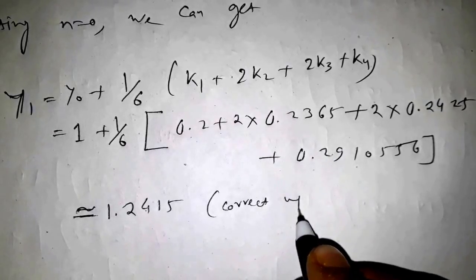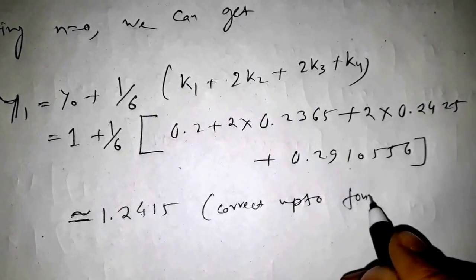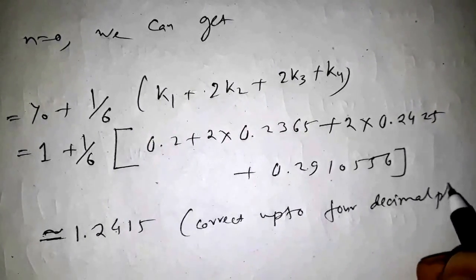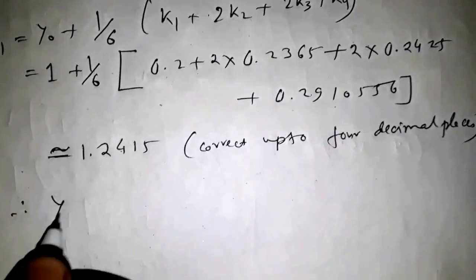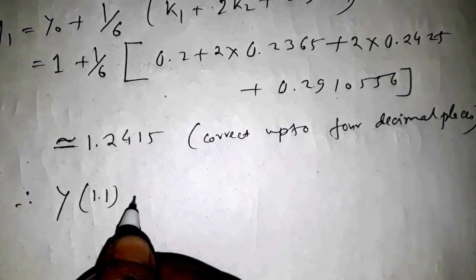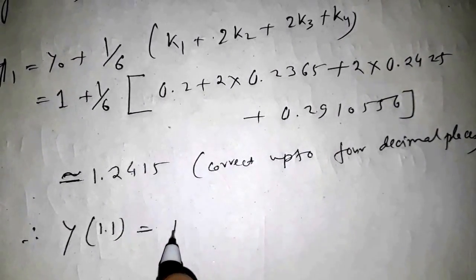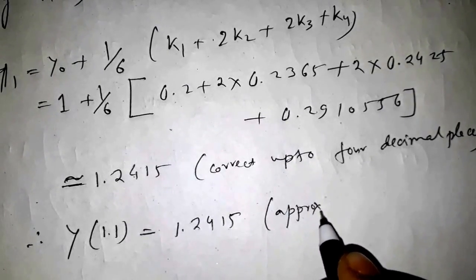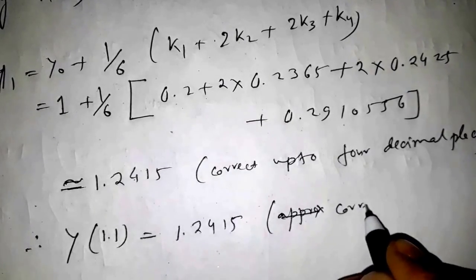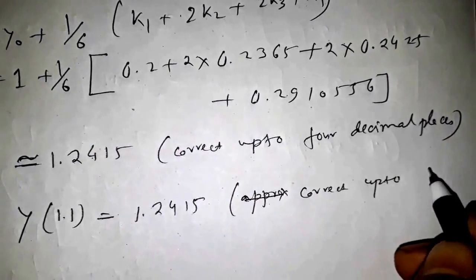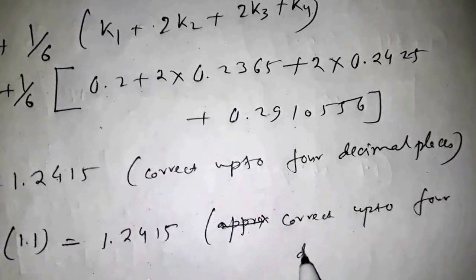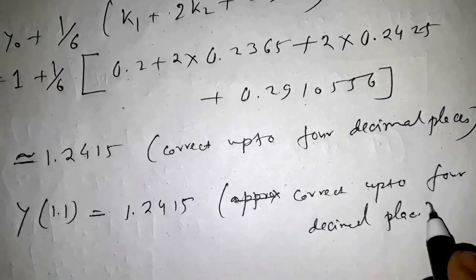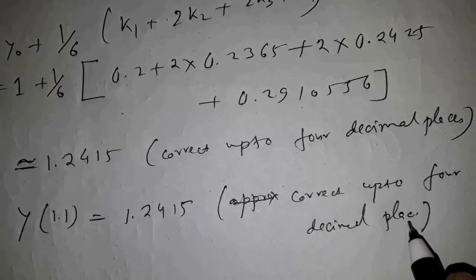This answer is correct up to four decimal places. So the value of y(1.1) = 1.2415 approximately. In this way we can solve every Runge-Kutta fourth order method problem.